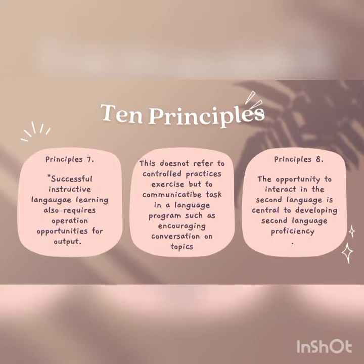Principle seven: successful instructed language learning also requires opportunities for output. This does not refer to controlled practice exercises, but to communicative tasks in a language program, such as encouraging conversation on topics.